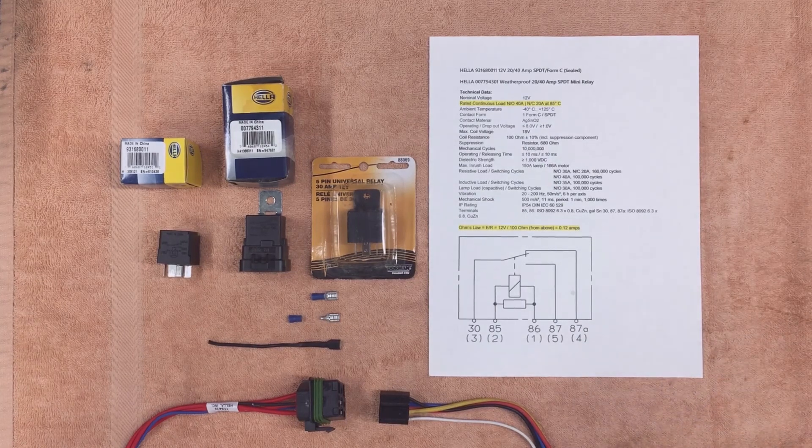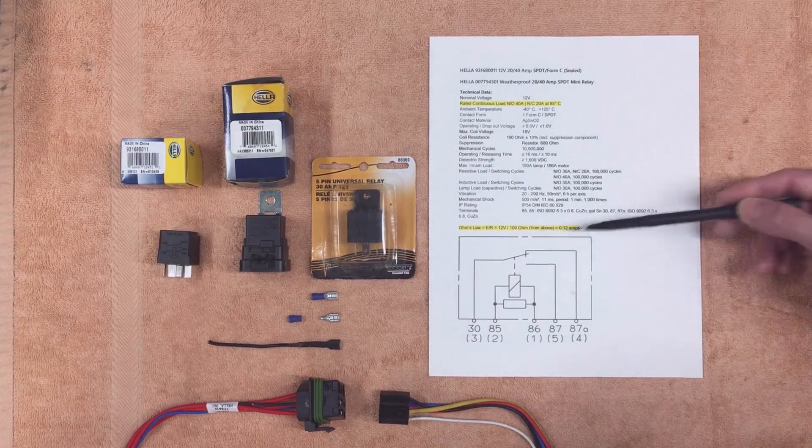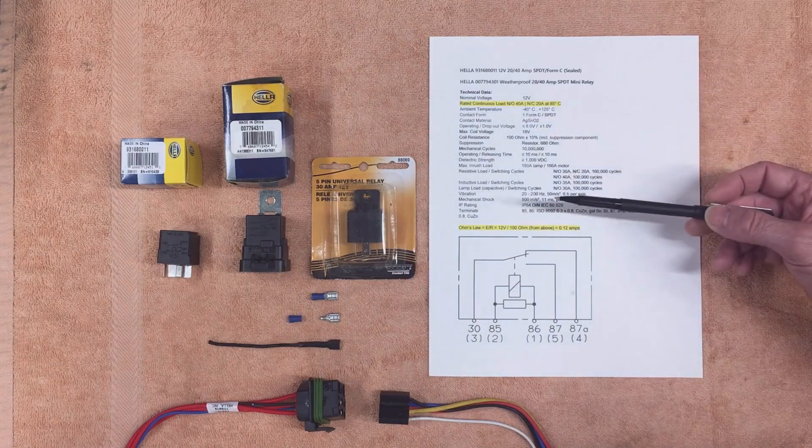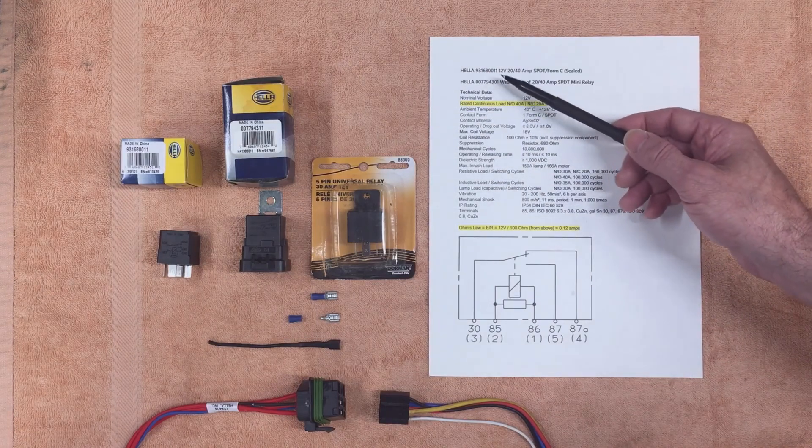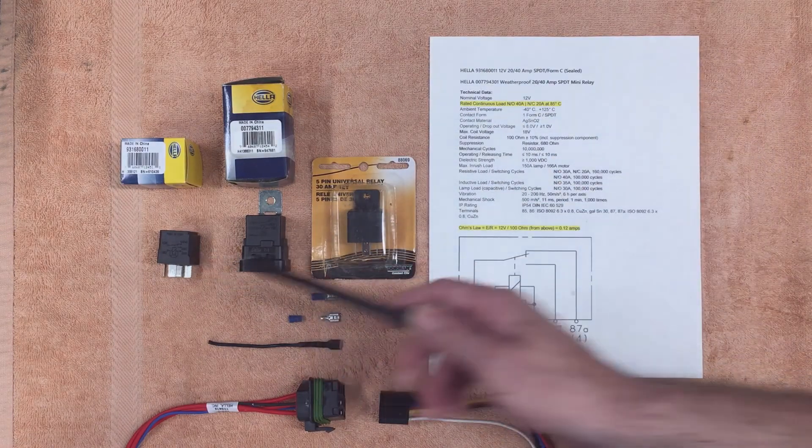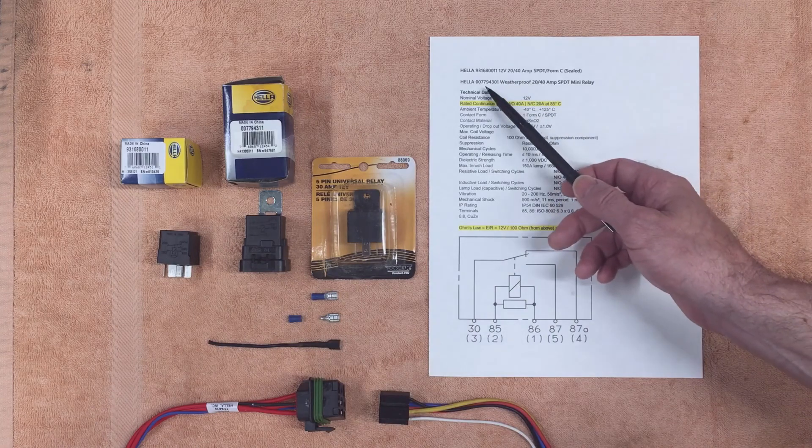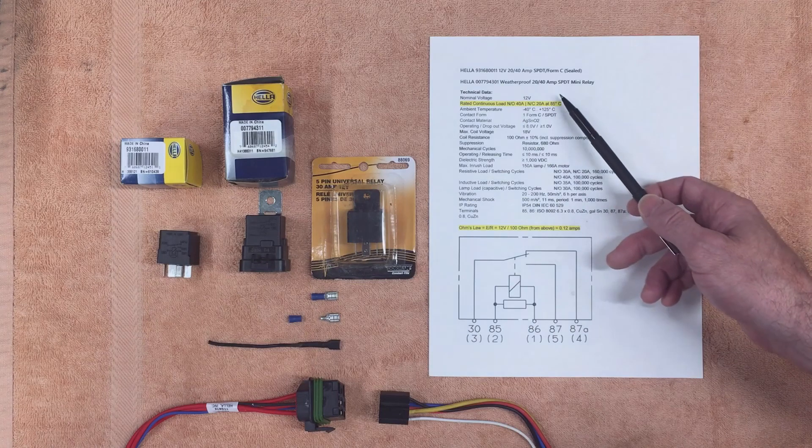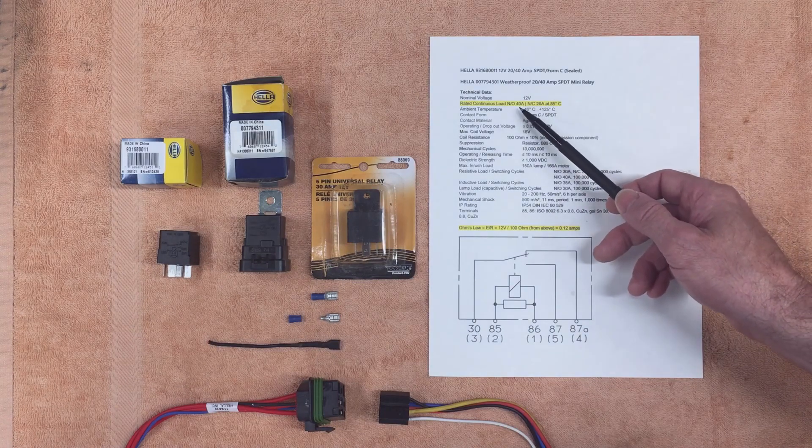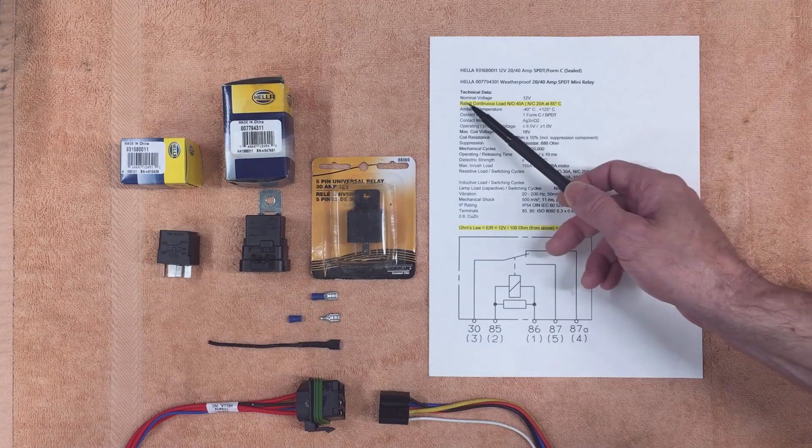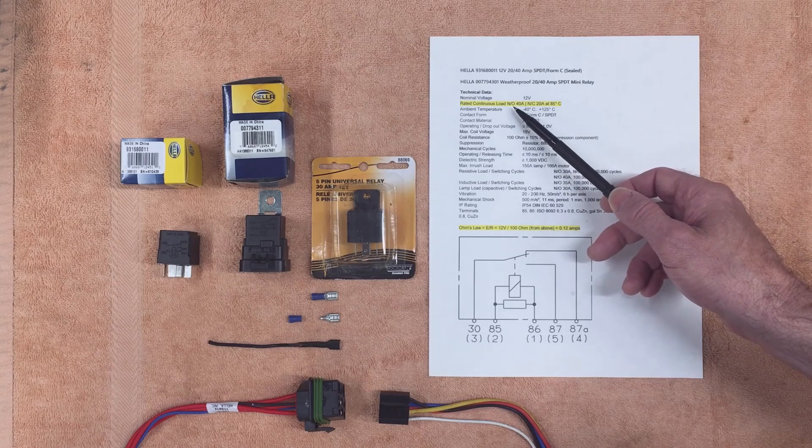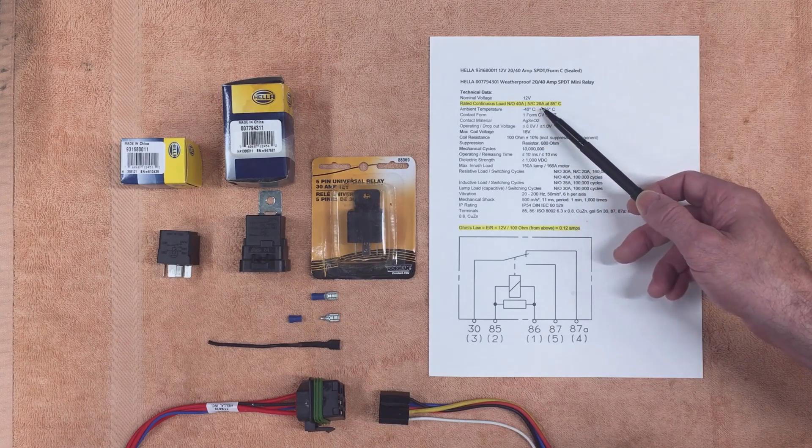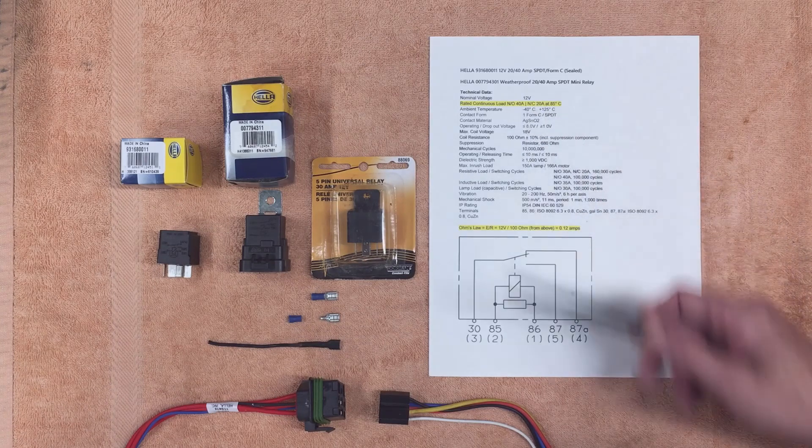These relays have outstanding specs. So here's the spec sheet from the Hella website and here's the two part numbers. The first one is the little guy that doesn't have the weather shield on it, and the part number for the second one that has the weather shield. Both are rated at 40 amps continuous on the normally open contacts and 20 amps continuous on the normally closed contacts.